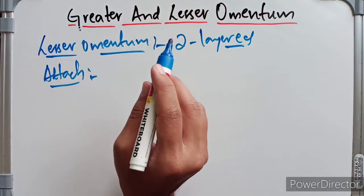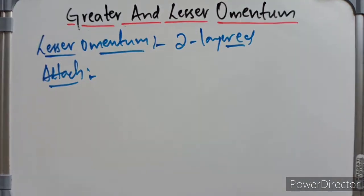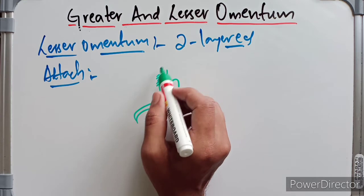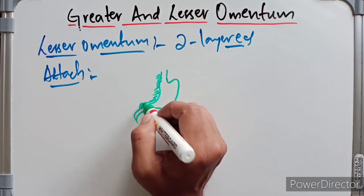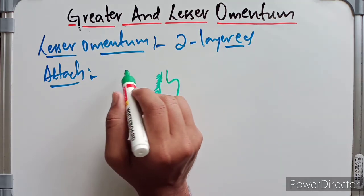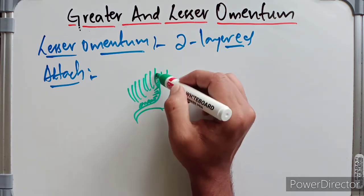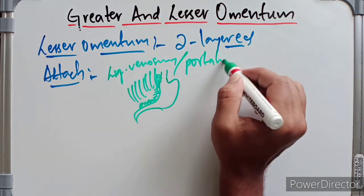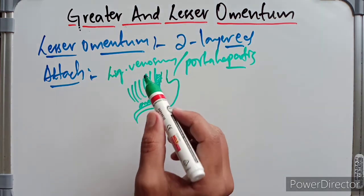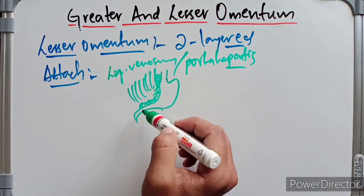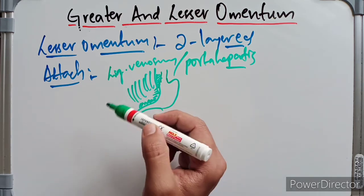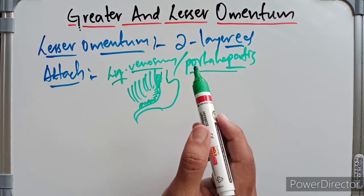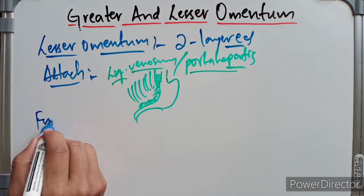Regarding the attachments of the lesser omentum: inferiorly, it is attached to the right side of the abdominal esophagus, the lesser curvature of the stomach, and the first two centimeters of the duodenum. Superiorly, it is attached to the inferior surface of the liver along the ligamentum venosum and the porta hepatis.